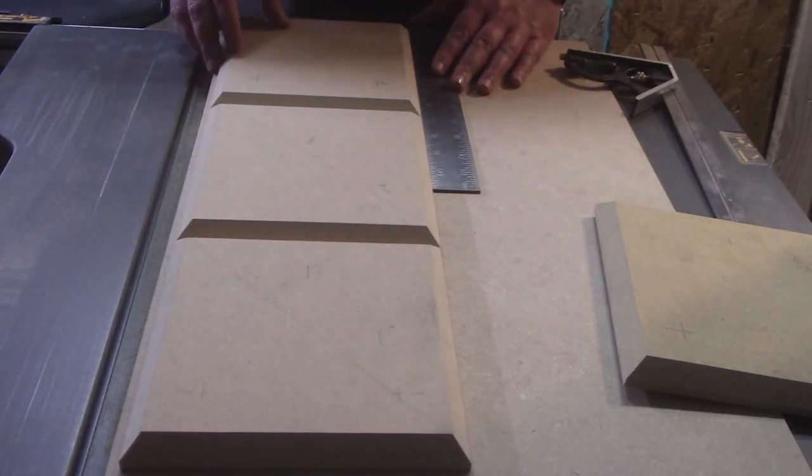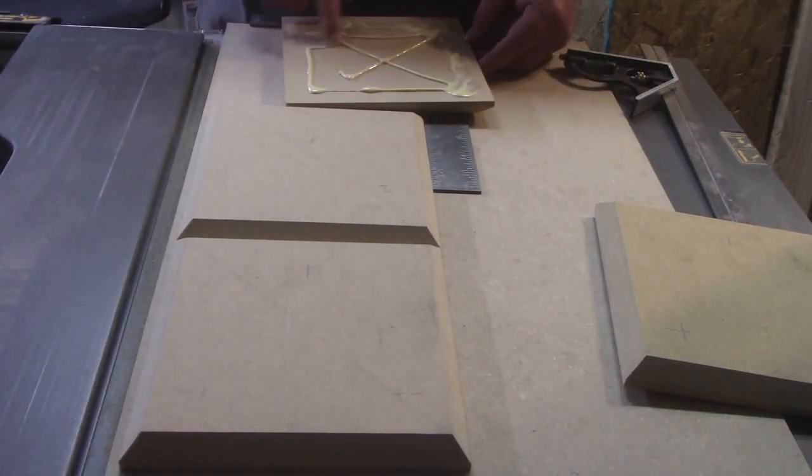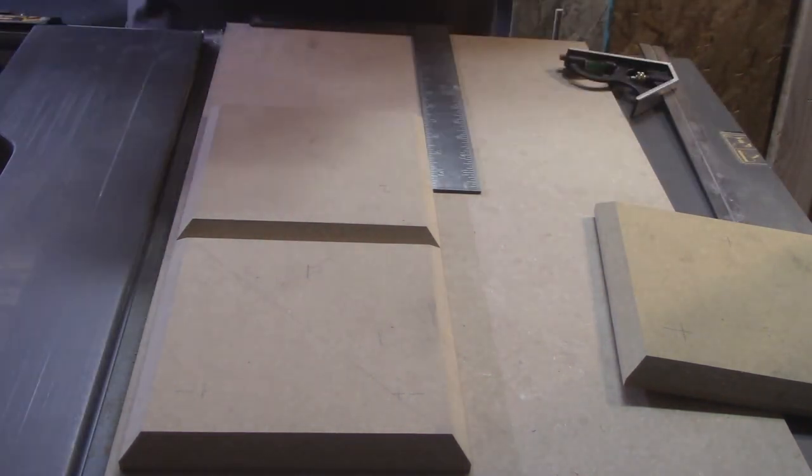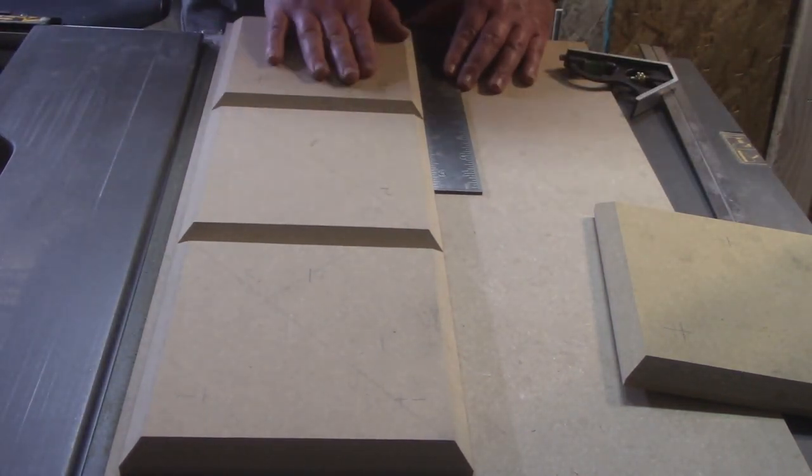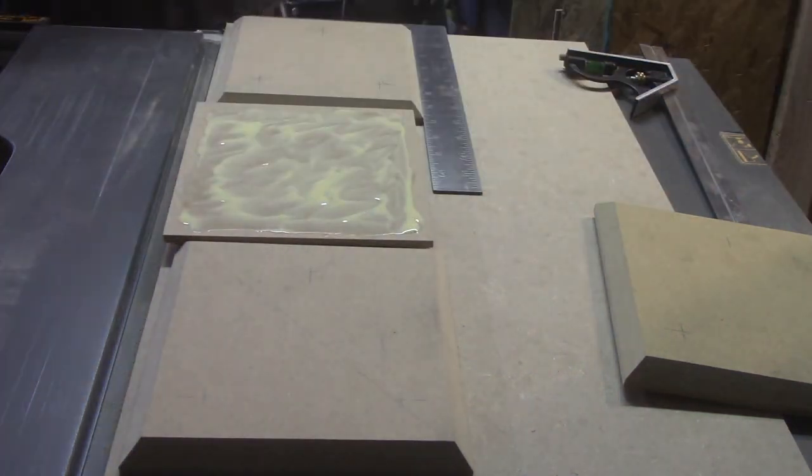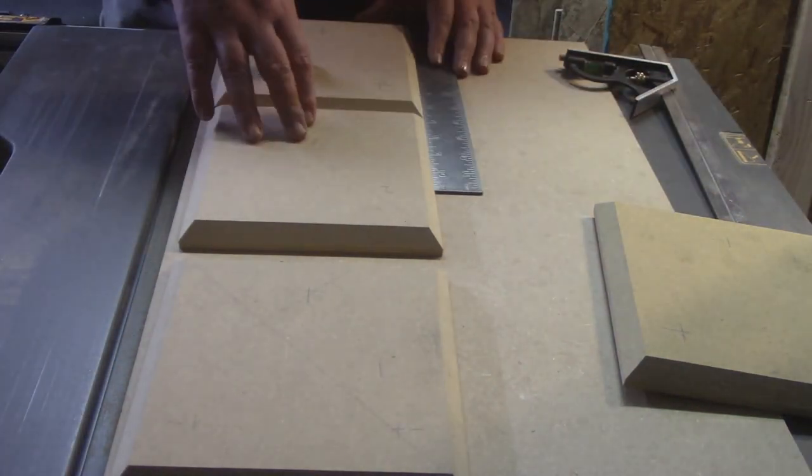I then went ahead and squared them up and glued them together. Now I didn't plan on having this backer board but it helped by making the hanging situation easier. You do gotta love useful mistakes. After all that is how my son was conceived.